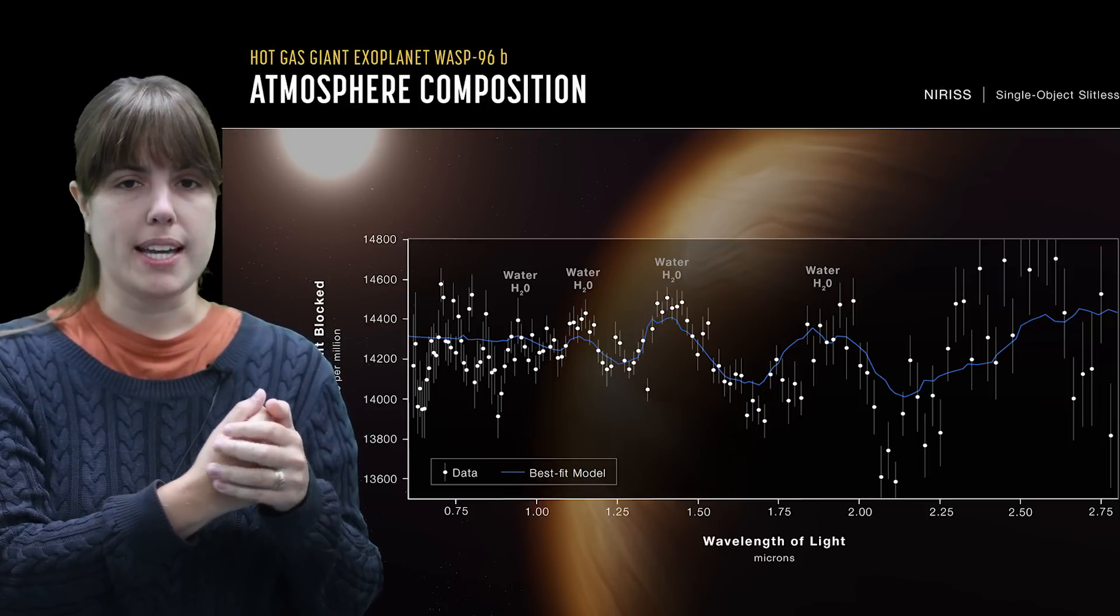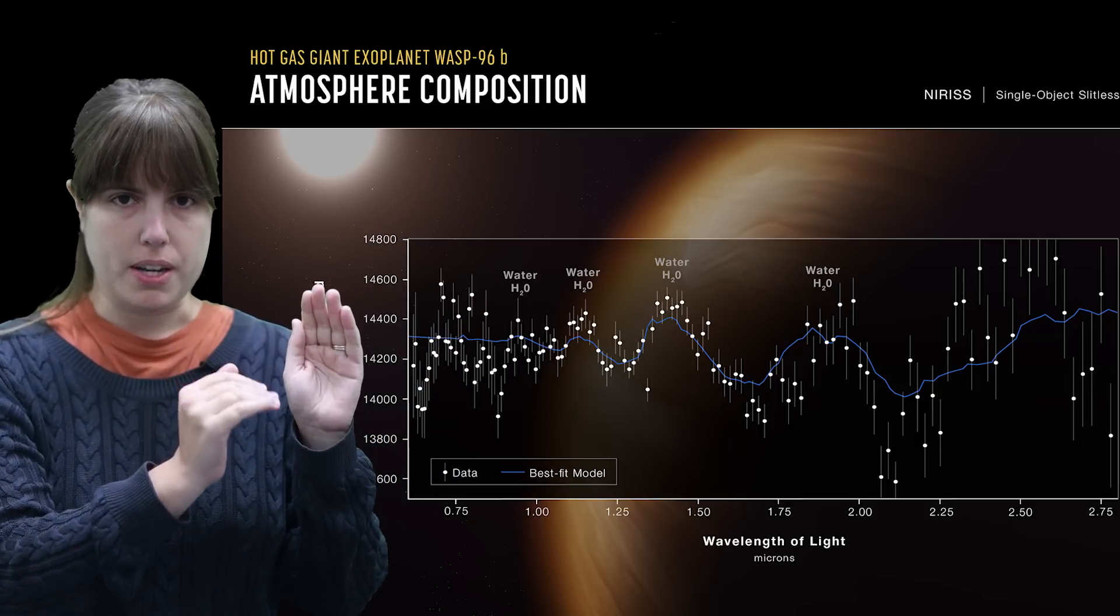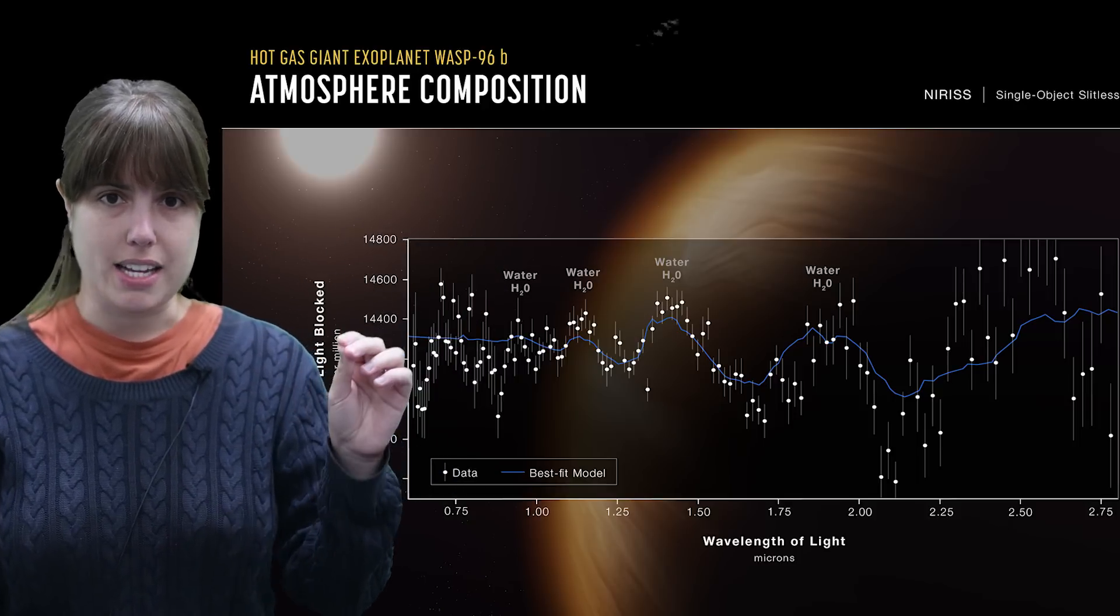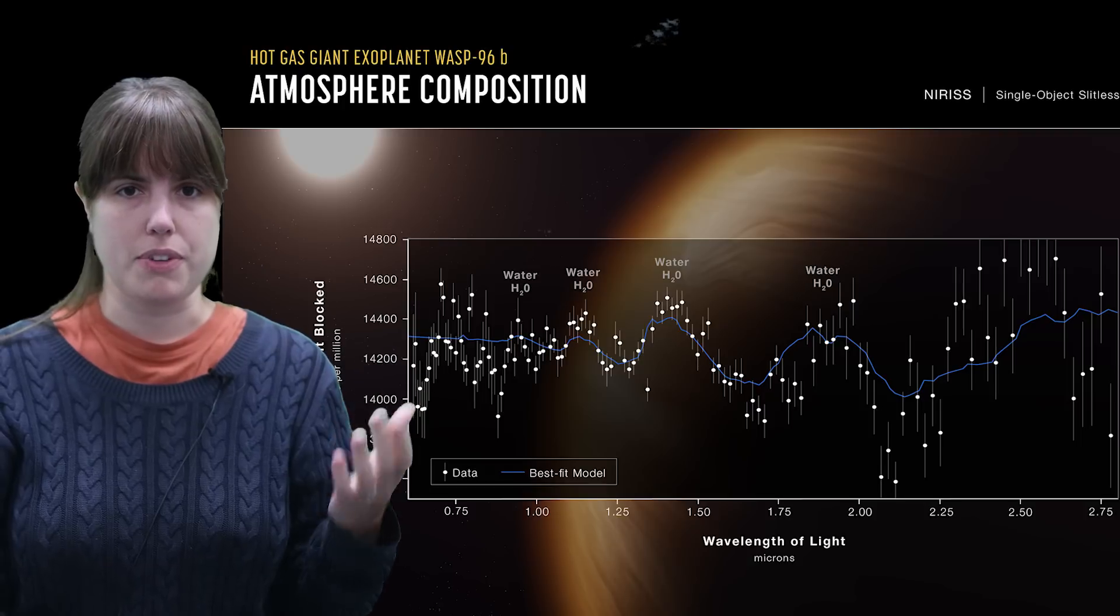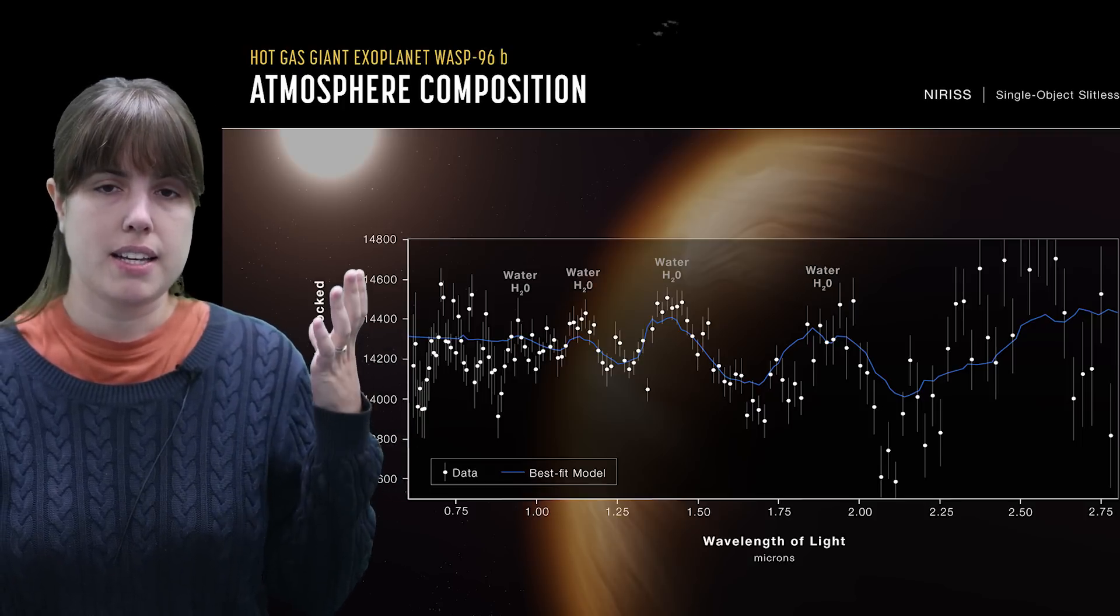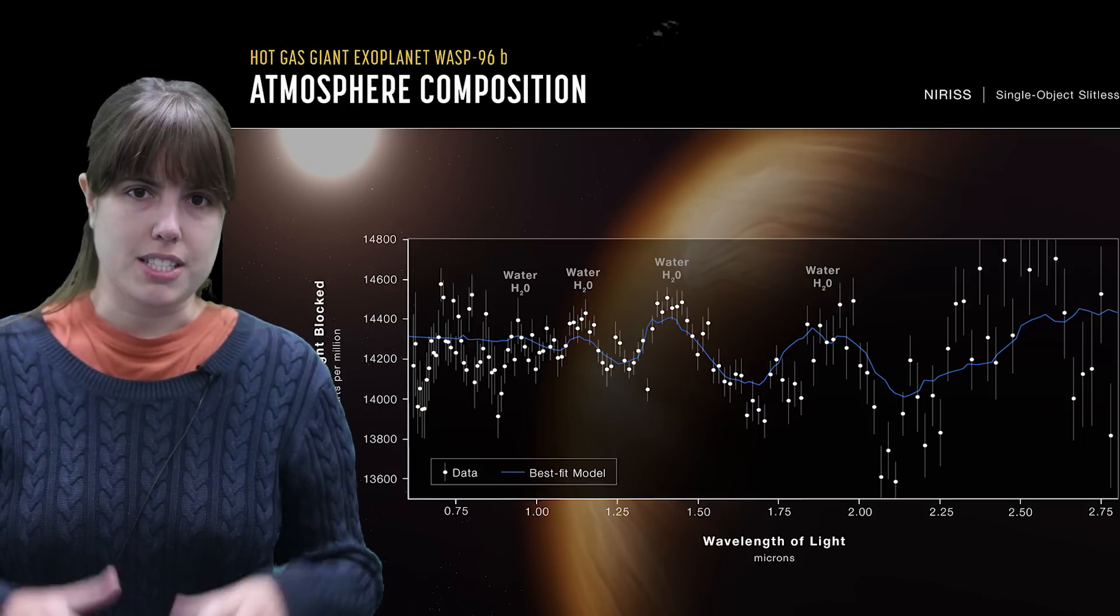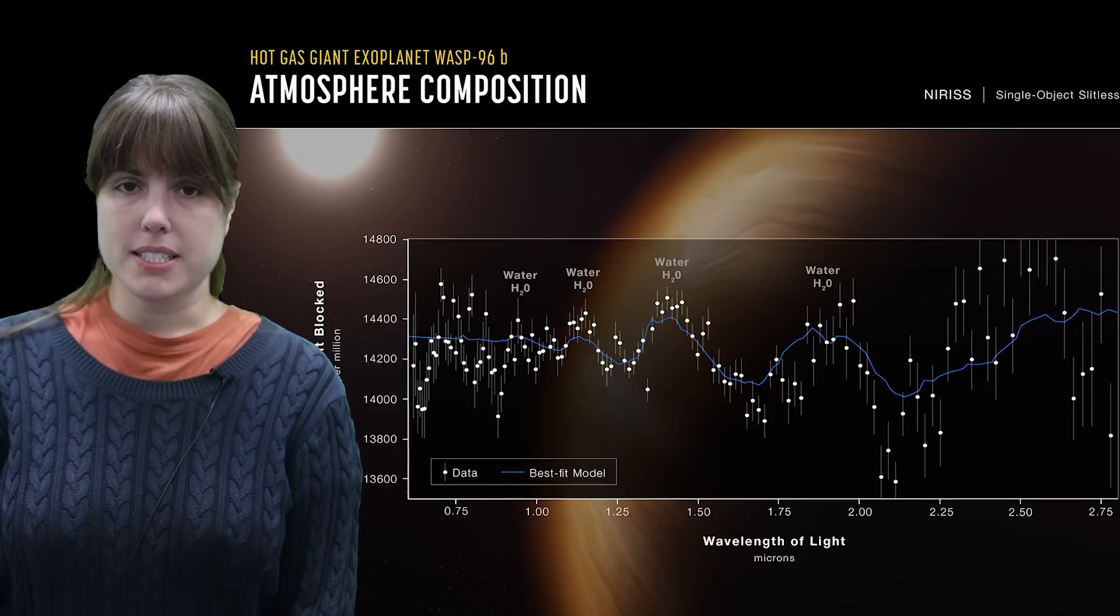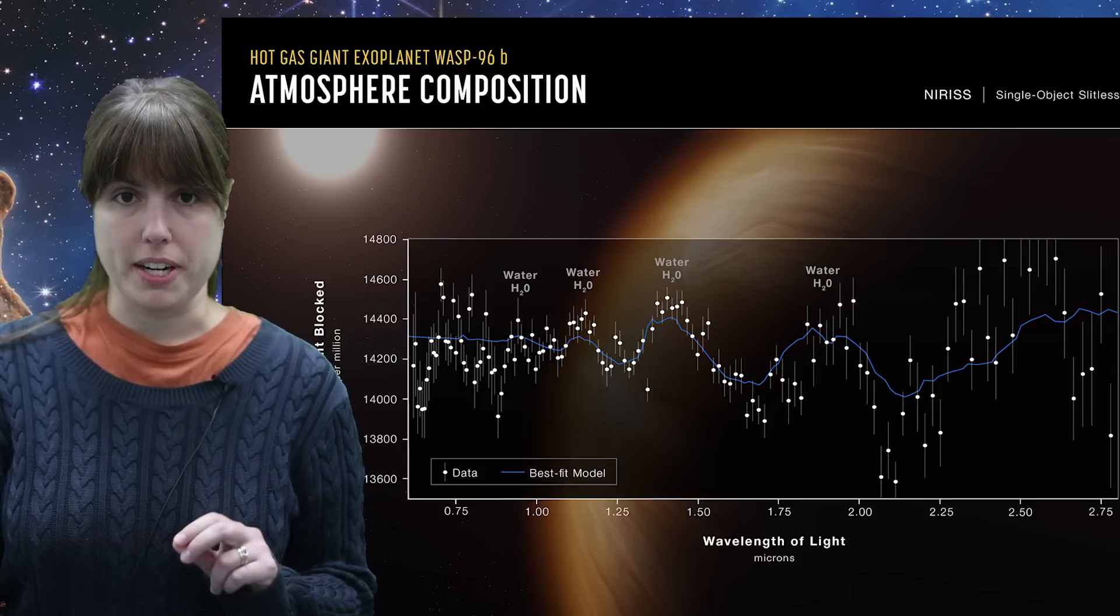Now, with James Webb, we can get the light that is going through the atmosphere of that exoplanet and study what that light is telling us about the composition of the atmosphere. This atmosphere has water in it. This is not liquid water. It's just in form of gas.